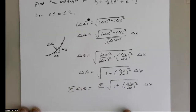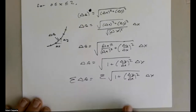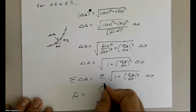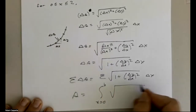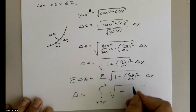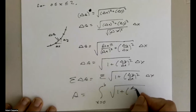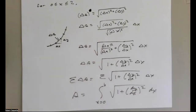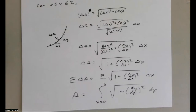As we shrink delta x to 0, the total arc length s will be the integral as x goes from a to b of the square root of 1 plus (dy/dx)² dx. Here we are at our arc length formula, and we're interested in x going from 0 to 2 for that function.